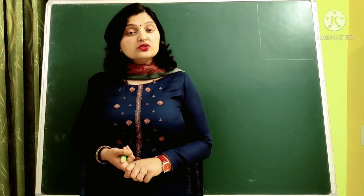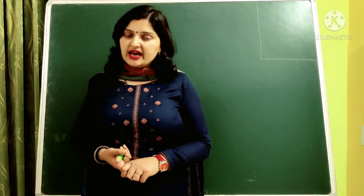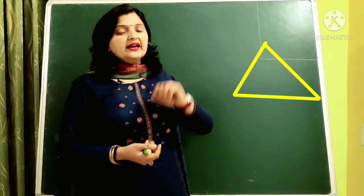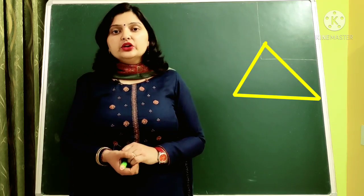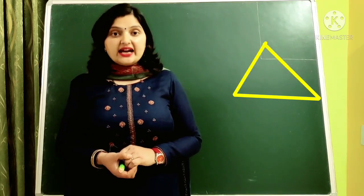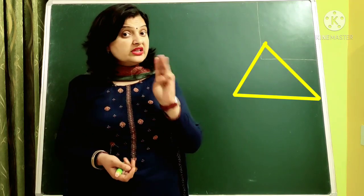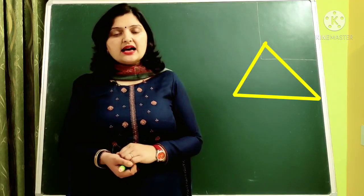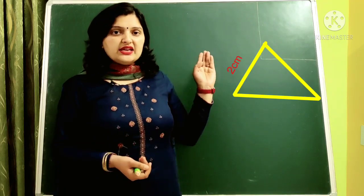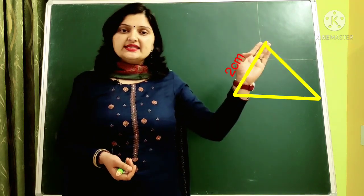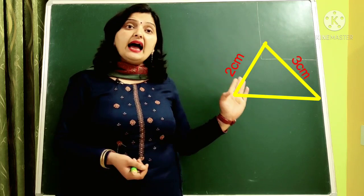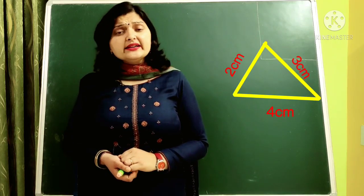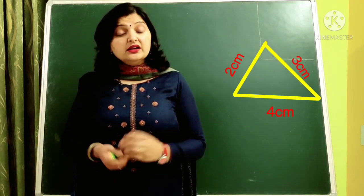Let us take triangle first. This is a triangle and we know that a triangle has three sides. Suppose the three sides of the triangle are 2 cm, 3 cm, and 4 cm. Now calculate its perimeter.